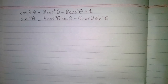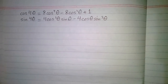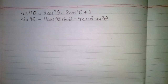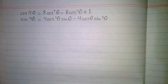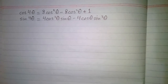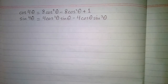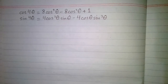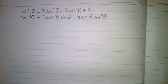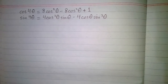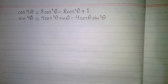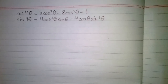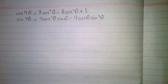In this video we will prove that cos4θ is equal to 8cos⁴θ minus 8cos²θ plus 1, and sin4θ is equal to 4cos³θ·sinθ minus 4cosθ·sin³θ. In order to prove these identities we will use De Moivre's theorem.